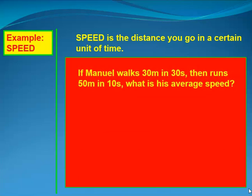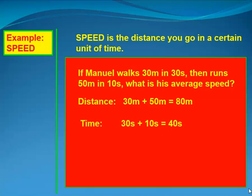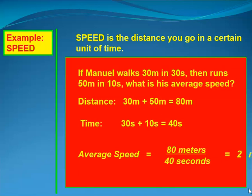If Manuel walks 30 meters in 10 seconds and then runs 50 meters in 10 seconds, what is his average speed? You add the distances to get the total distance — that's 80 meters — then add the times to get the total time of 40 seconds. Applying the formula gives 80 meters divided by 40 seconds, which equals 2 meters per second.